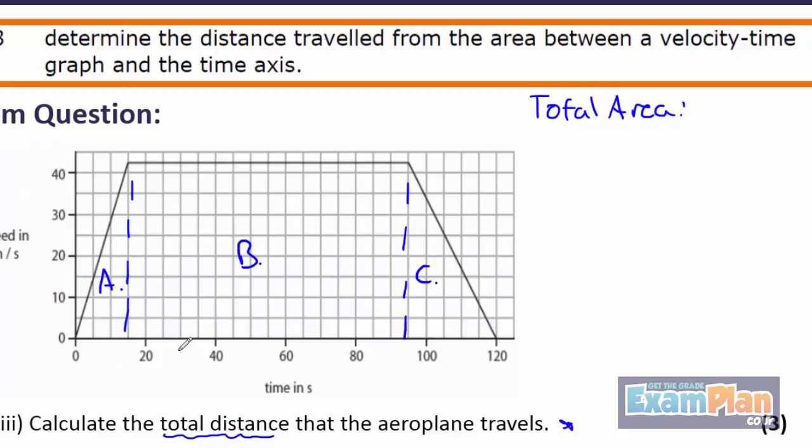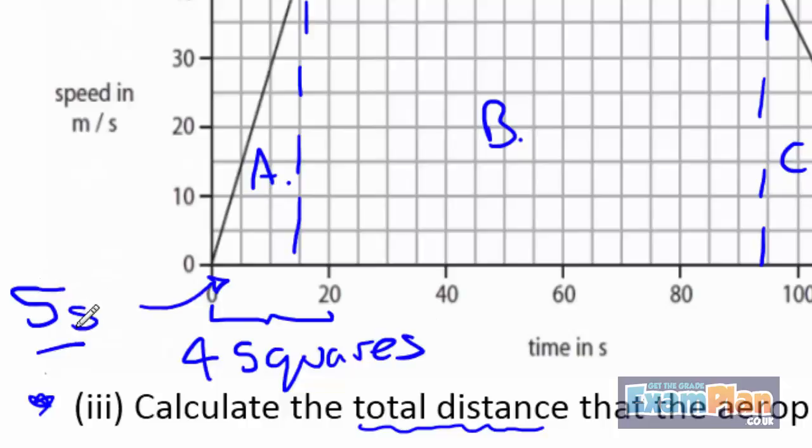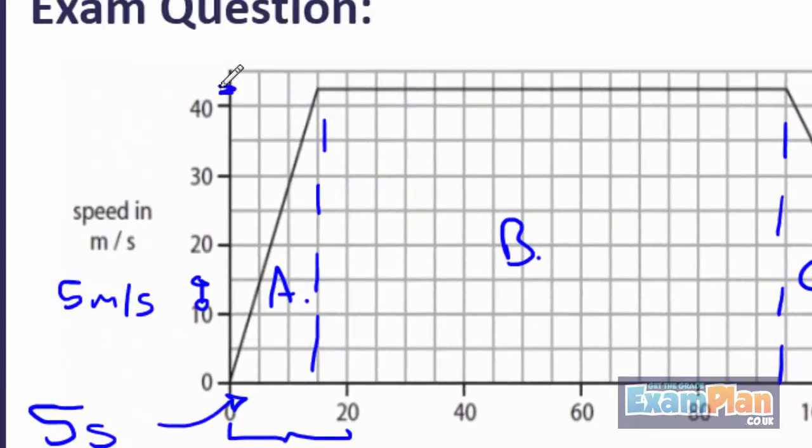Be careful with the scales here. On the time axis, 20 seconds is represented by four small squares. So each square must be 5 seconds. On the speed axis, each square is 5 meters per second. So half a square must be 2.5 meters per second.